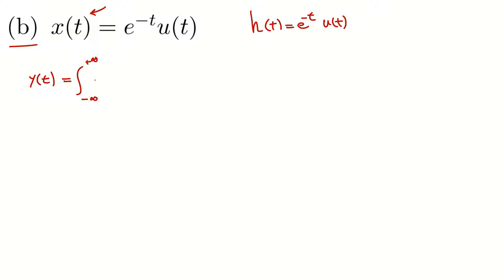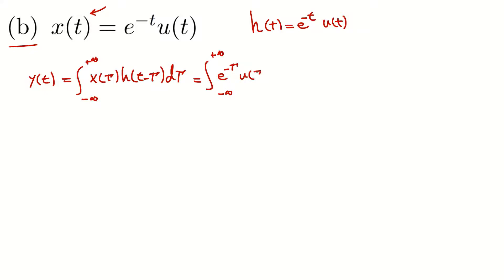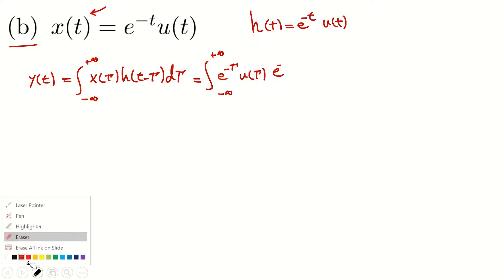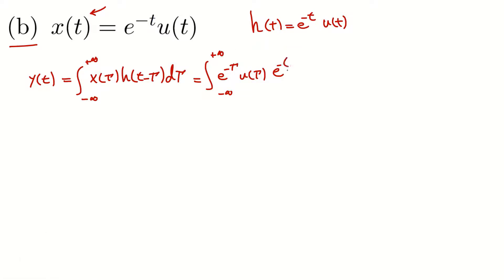We define the convolution as the integral of x(τ) · h(t - τ) dτ. Expanding that and replacing the values of the signals, we have e^(-τ) · u(τ) times e^(-(t-τ)) · u(t - τ) dτ.